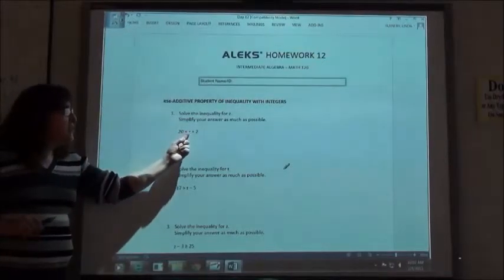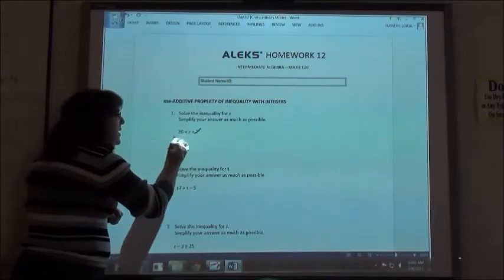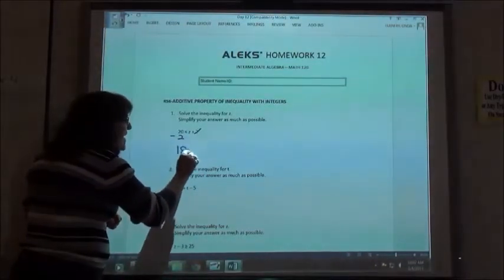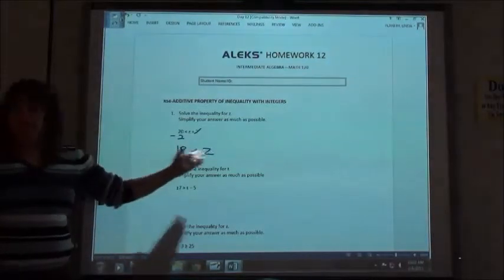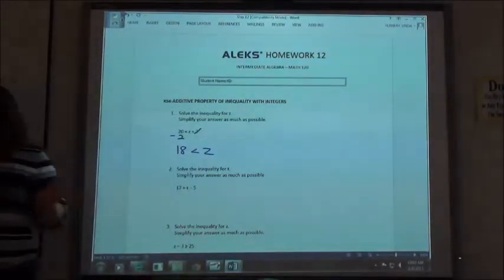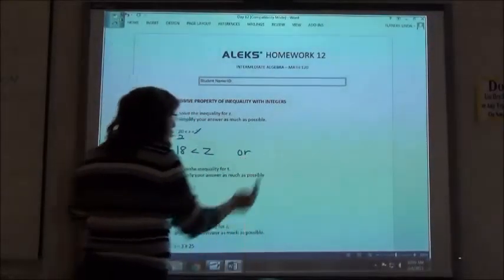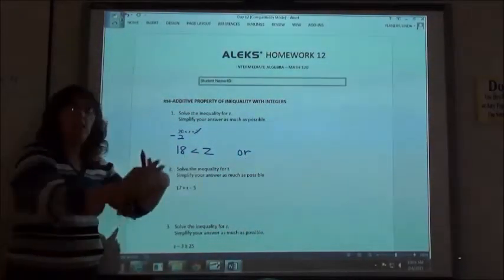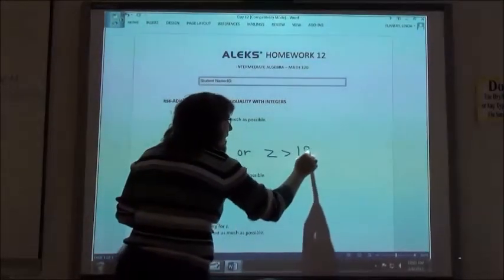If I want to solve this for z, I need to move the 2 to the other side. I'm going to minus the 2, so 18 is less than z. When you enter it in, you either need to just leave it in that order, which is what I would suggest, or if you turned it around so it makes sense to you—if 18 is less than z—you have to flip the whole thing around, then z is greater than 18.